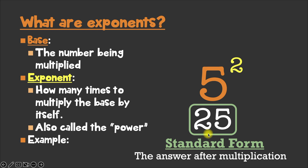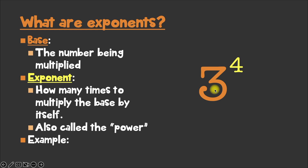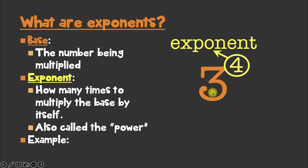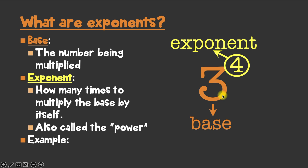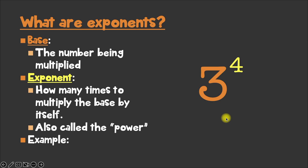Let's look at another example. Here we've got 3 to the fourth power. This number that's written smaller in the upper right corner is the exponent, which means this bigger written number here is called the base. And remember that an exponent tells us how many times we multiply our base. So when we write this in expanded form, what do you think we're going to write?